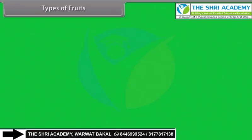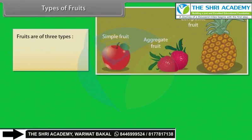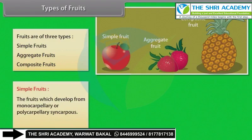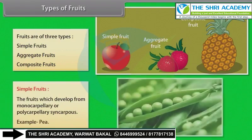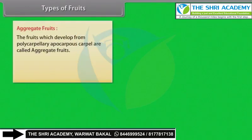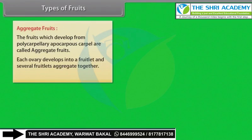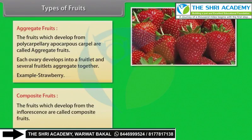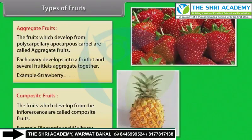Types of Fruits: Fruits are of three types — simple fruits, aggregate fruits, and composite fruits. Simple fruits develop from monocarpellary or polycarpellary syncarpous ovaries. Aggregate fruits develop from polycarpellary apocarpous carpels; each ovary develops into a fruitlet and several fruitlets aggregate together — example: strawberry. Composite fruits develop from the inflorescence — example: pineapple and mulberry.